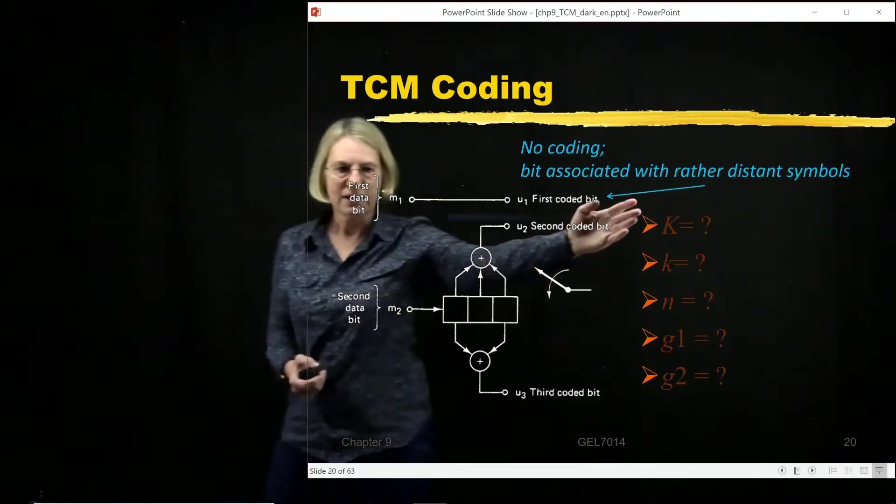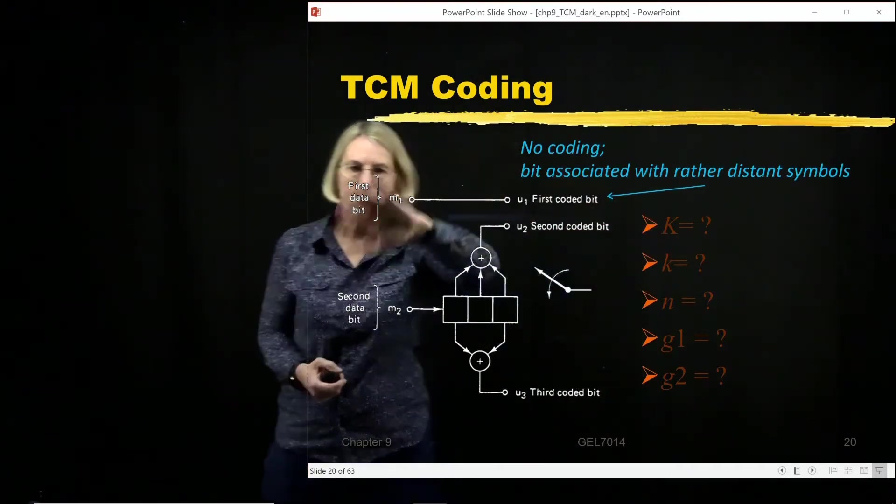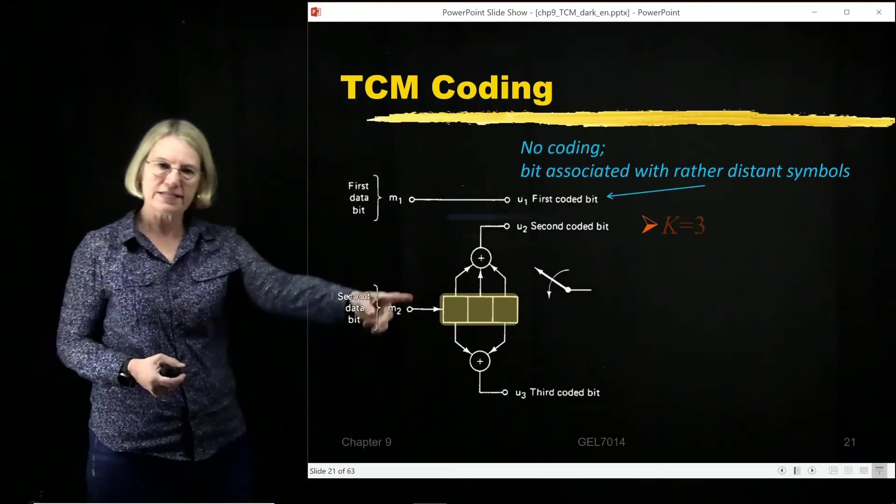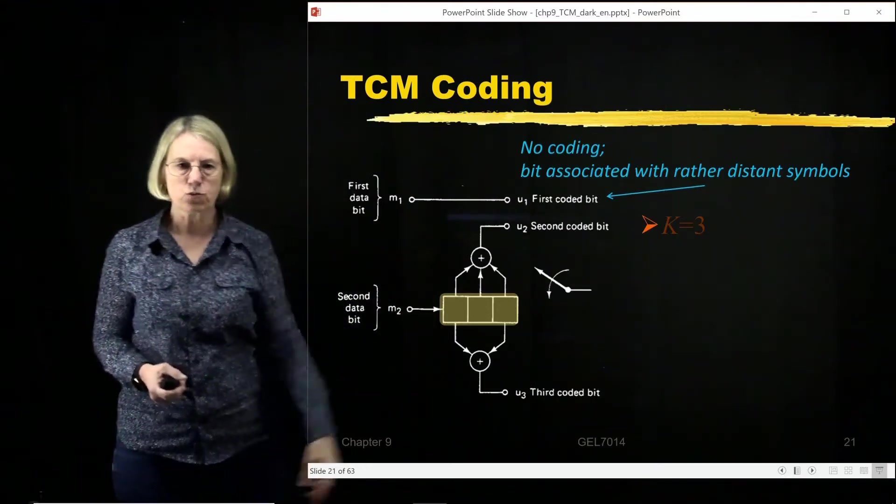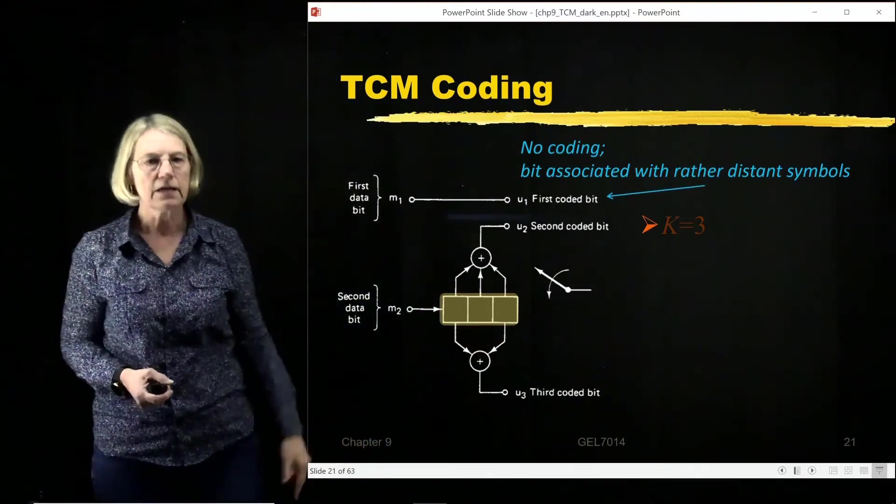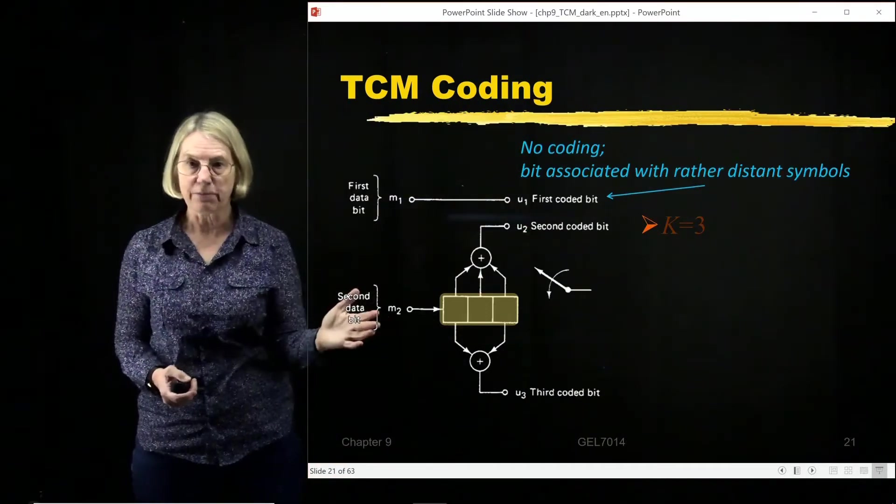So let's start here. Let's start answering these questions. What's the constraint length of the code that I'm using in this example? And the constraint length, well we can see it here. There's three shift registers, one the input register, and then the other two which are the state of the encoder. So constraint length is three for this example that I'll be showing you.